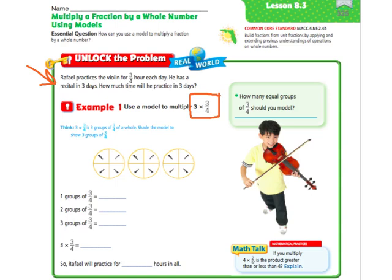Raphael practices the violin for 3 fourths hour each day. Each means multiply. He has a recital in 3 days, so how much time will he practice in 3 days? So that's where we get our 3 times 3 fourths. He has 3 days, and he's practicing for 3 fourths of an hour each day.